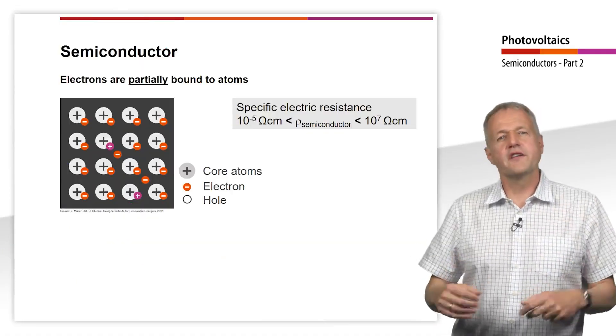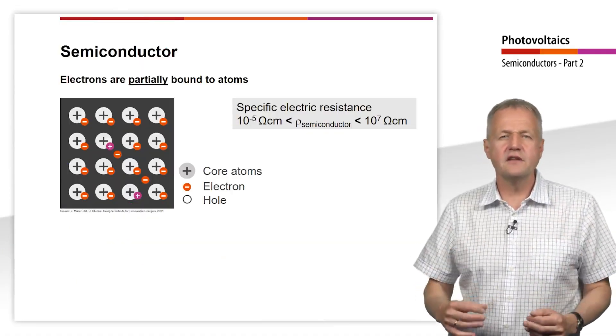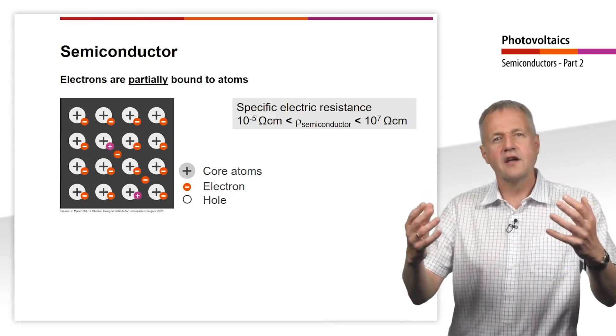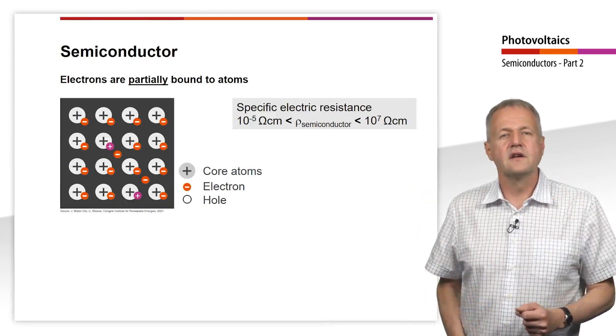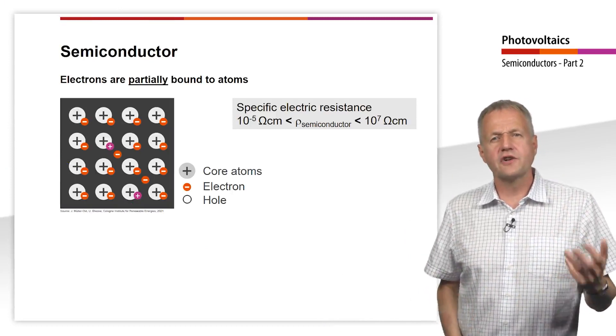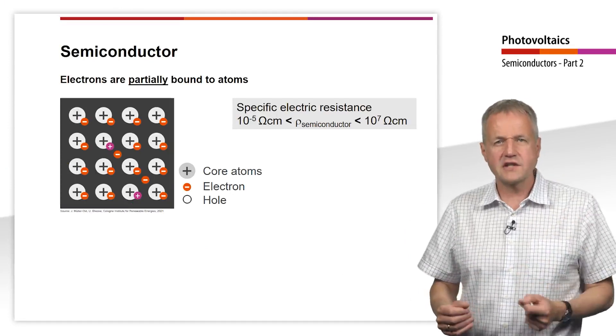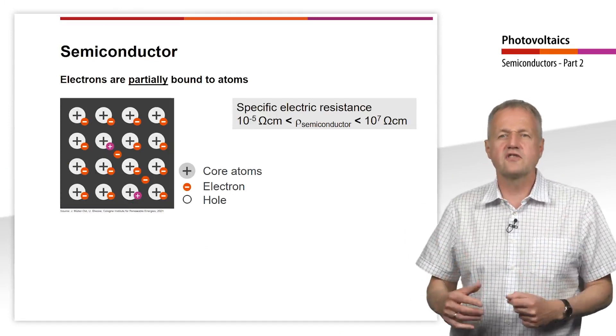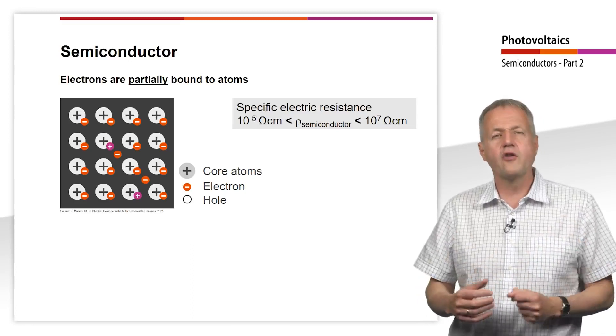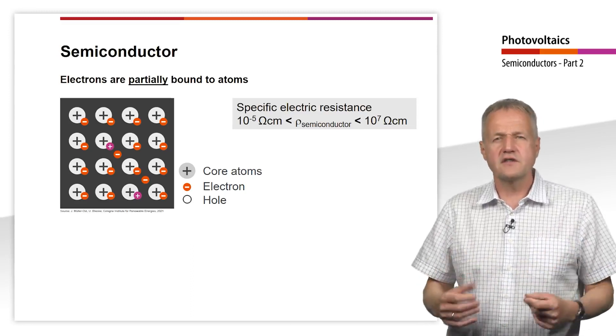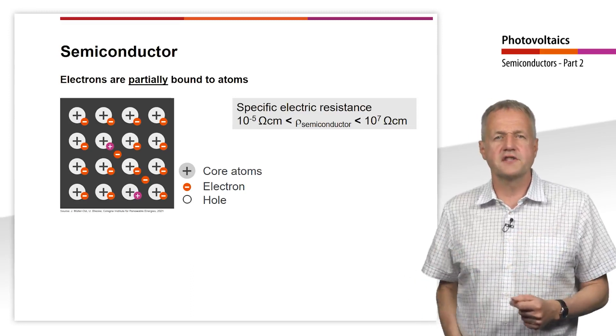The properties of a semiconductor are between those of a conductor and an insulator. The specific electrical resistance of a semiconductor is between 10 to the power of minus 5 ohm centimeter and 10 to the power of 7 ohm centimeter.